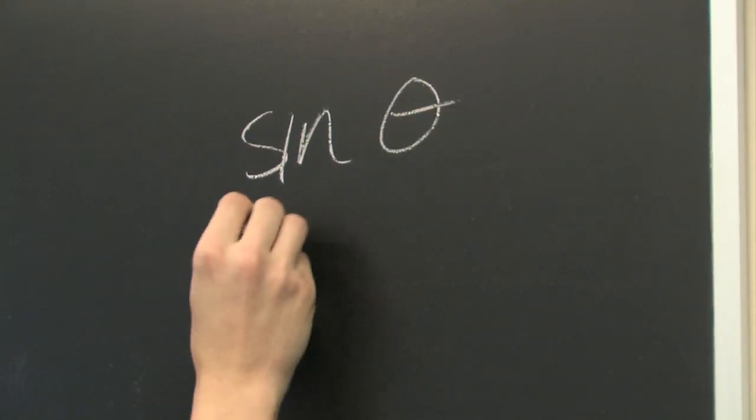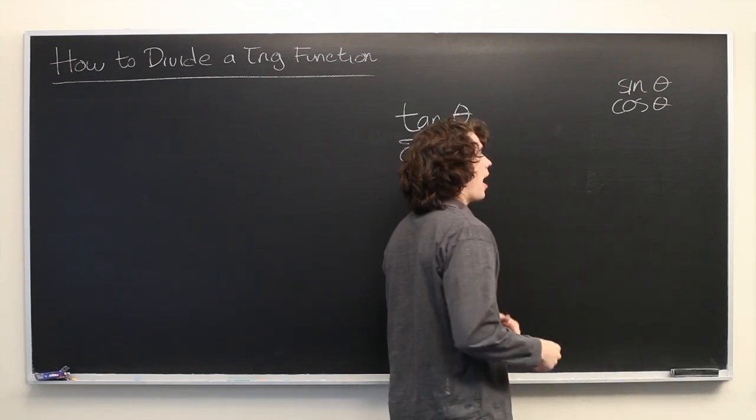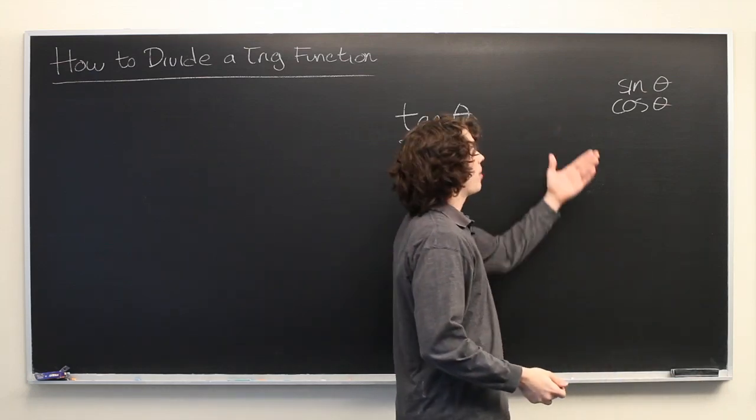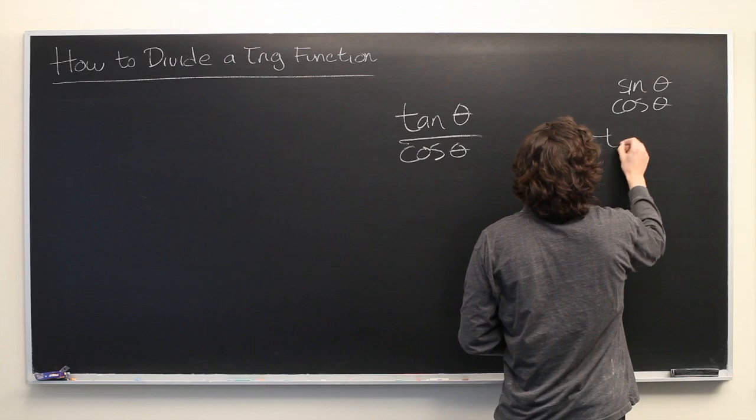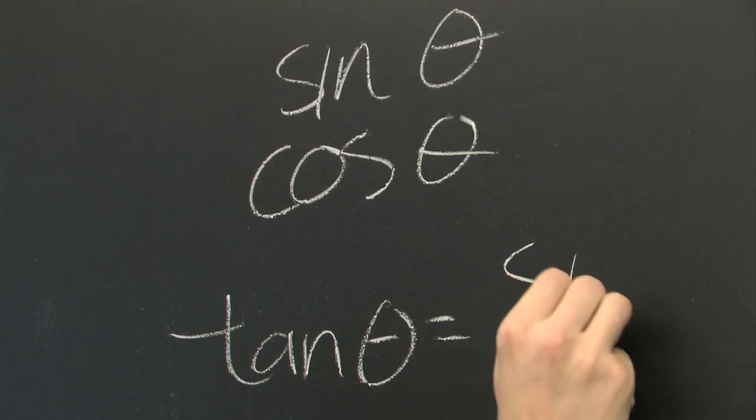Recall that we have our two basic trig functions, sine and cosine, and all other trig functions are defined based on these, where tangent is equal to sine over cosine.